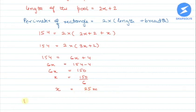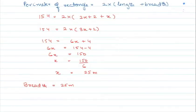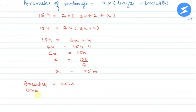Now x is equal to 25 meters, so I can write breadth is equal to 25 meters. So length will be equal to 25 into 2 plus 2, which is equal to 52 meters.